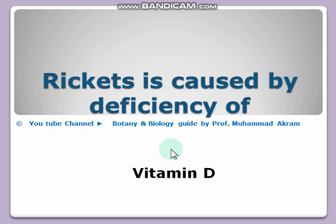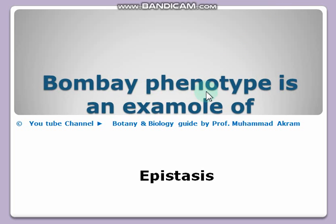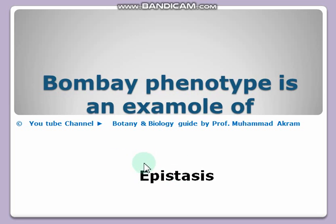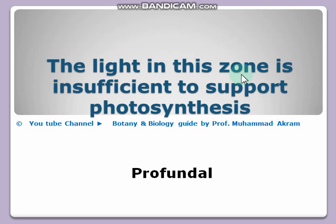Bombay phenotype is an example of epistasis. Bombay phenotype is a condition in which the blood group is genetically A, B, or AB, but phenotypically it is O. It is an example of epistasis. My YouTube channel has a video explaining Bombay phenotype in detail.